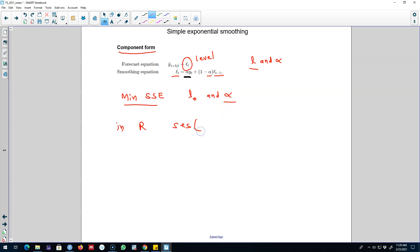In R you use SES function. First argument is your time series and the forecast horizon that you want to use, and this function will estimate the initial level and this alpha parameter for you.